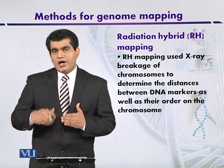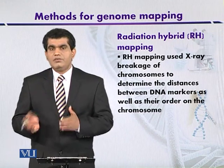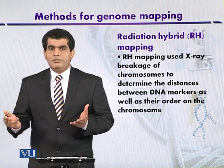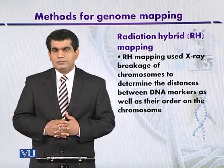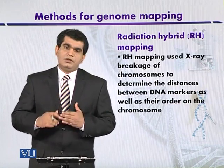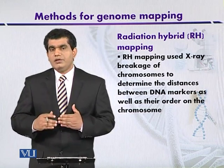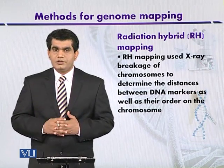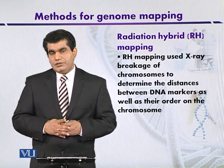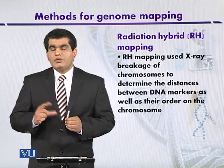In the hybrid cell formed as a result of the fusion of these two cells — in other words, human-rodent hybrid cells — the fragmented DNA will be expressed. Depending upon the position of genes, the fragmented DNA will express different proteins. The fragmented DNA segments can separate from each other and express proteins.